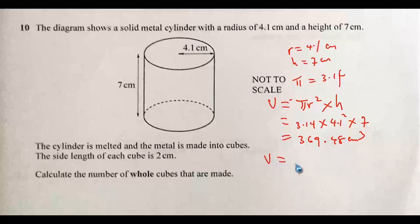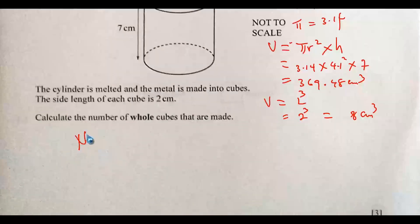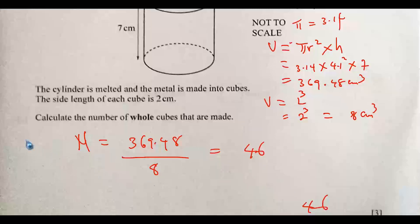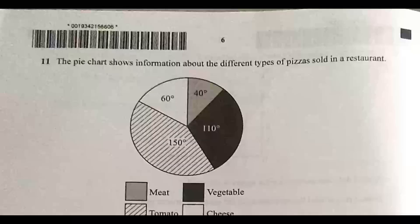The volume of the cube, since all sides are equal, is 2 to the power of 3, which equals 8 cubic centimeters (2 times 2 times 2). The number of whole cubes equals 369.48 divided by 8, which gives us 46 cubes.